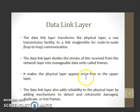Data link layer divides the stream of bits received from the network layer into manageable data units called frames. It makes the physical layer appear error-free to the upper layer.